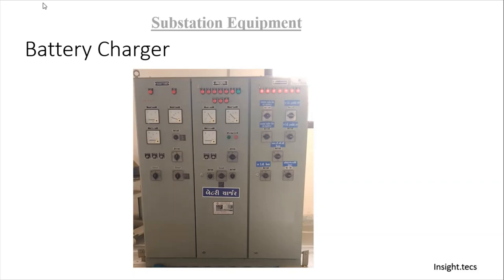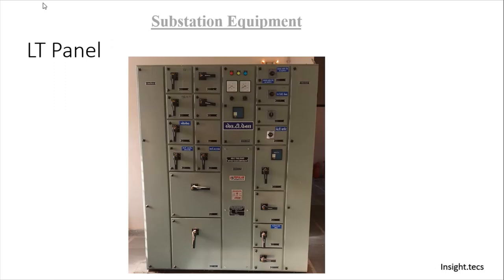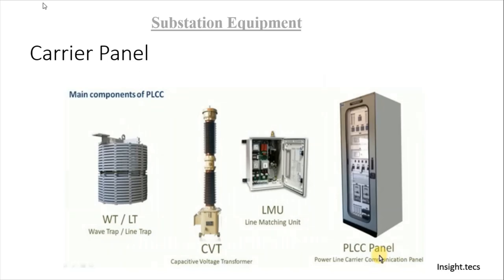Next is the battery charger. Just like we charge our mobile phones and other electronic devices with a charger, we have a charger for the substation batteries as well. Next are the LT panels and carrier panel. These are basically AC distribution panels, or you can say this panel maintains the auxiliary consumption of a substation.